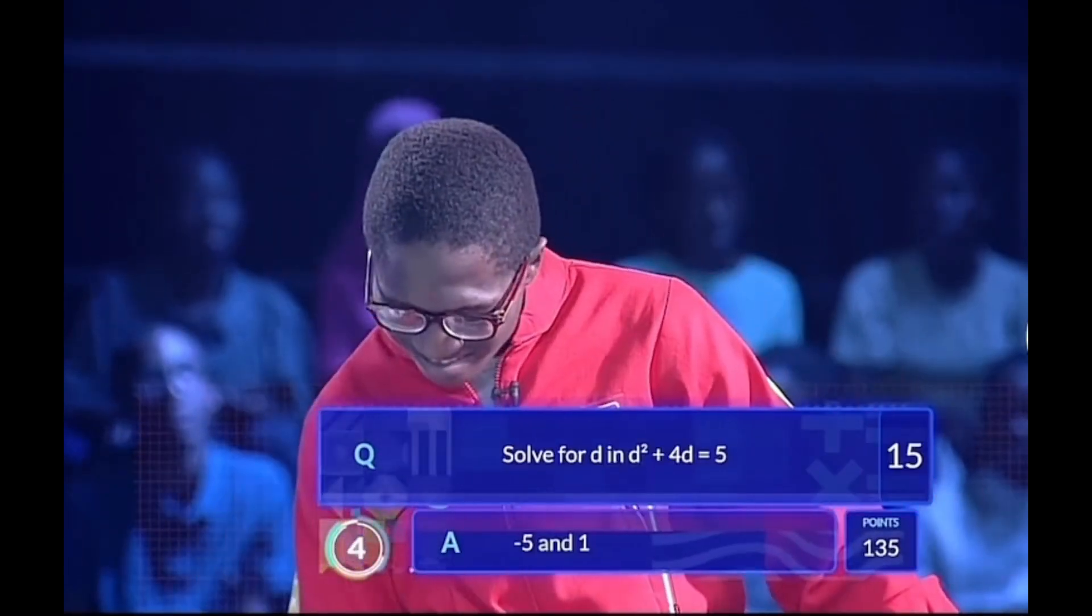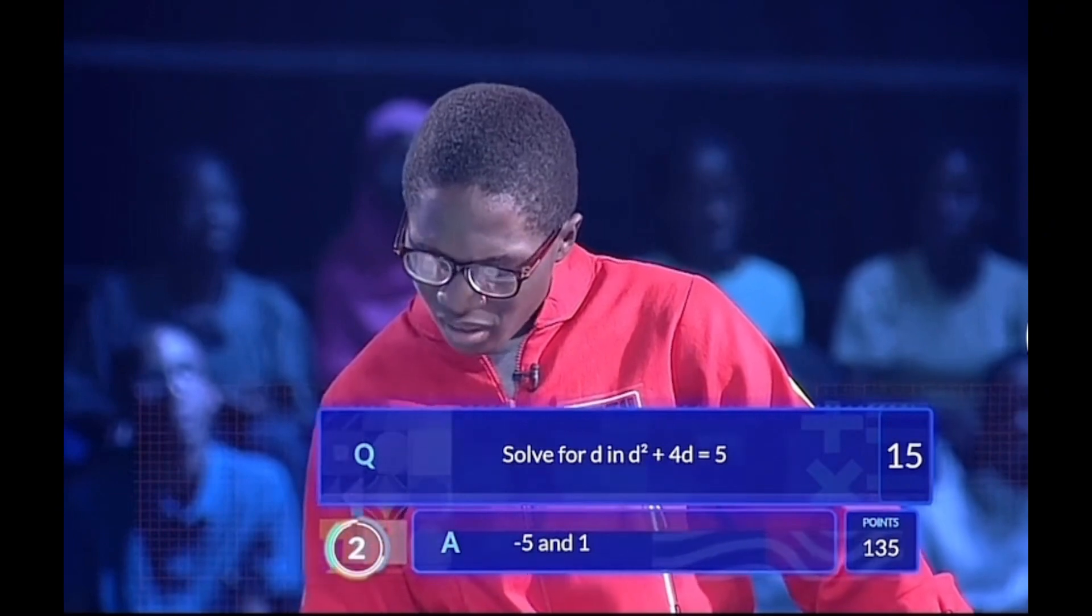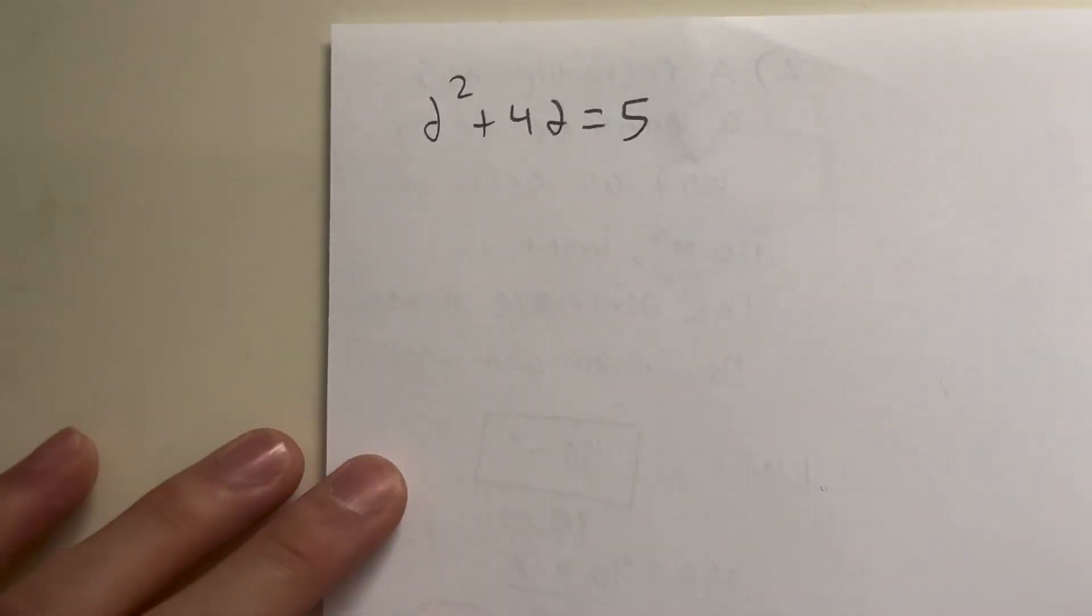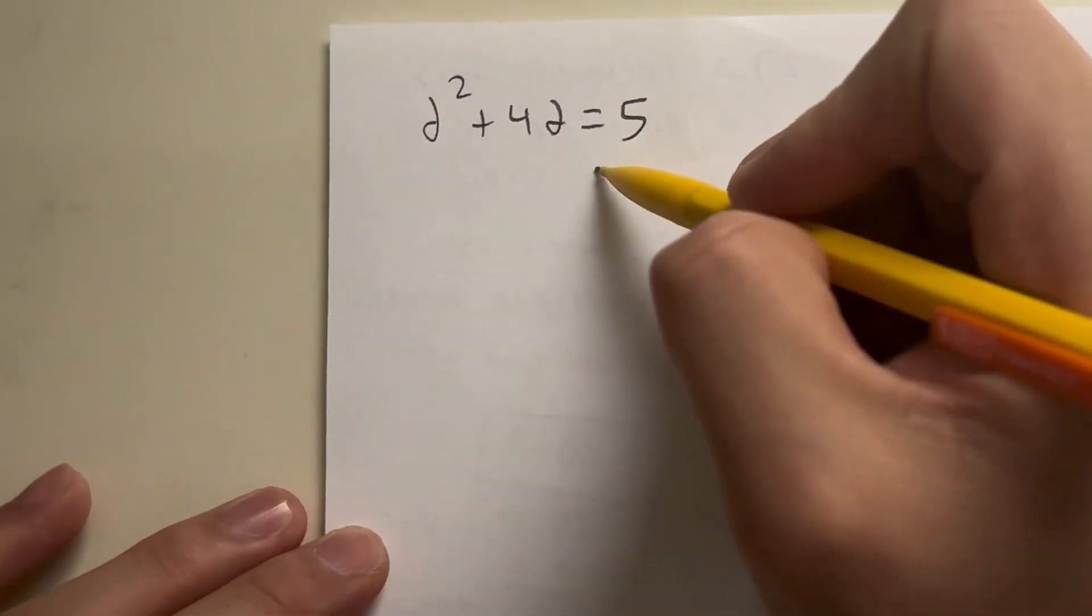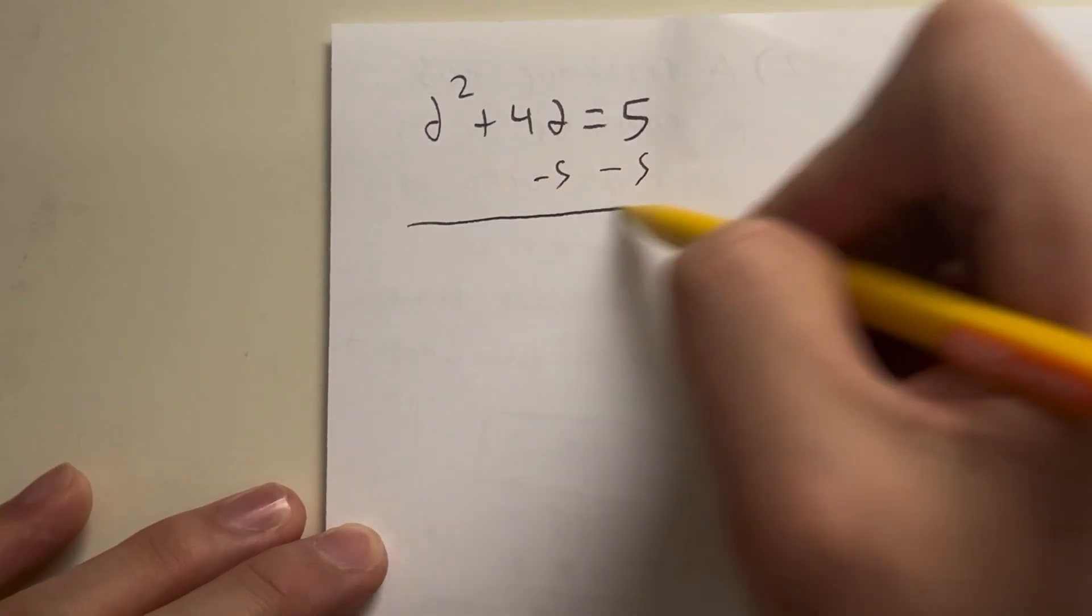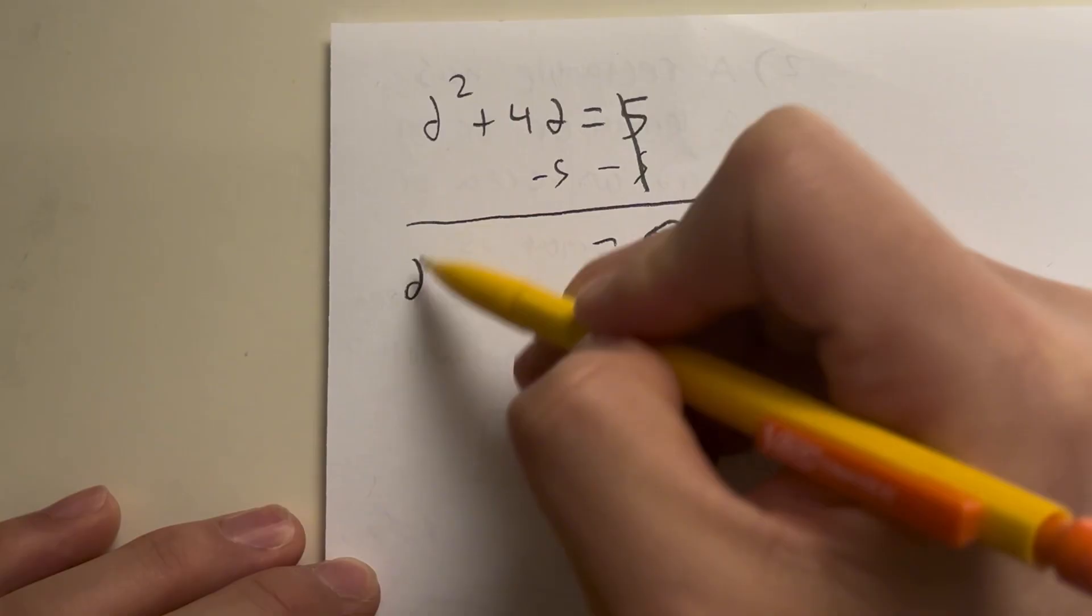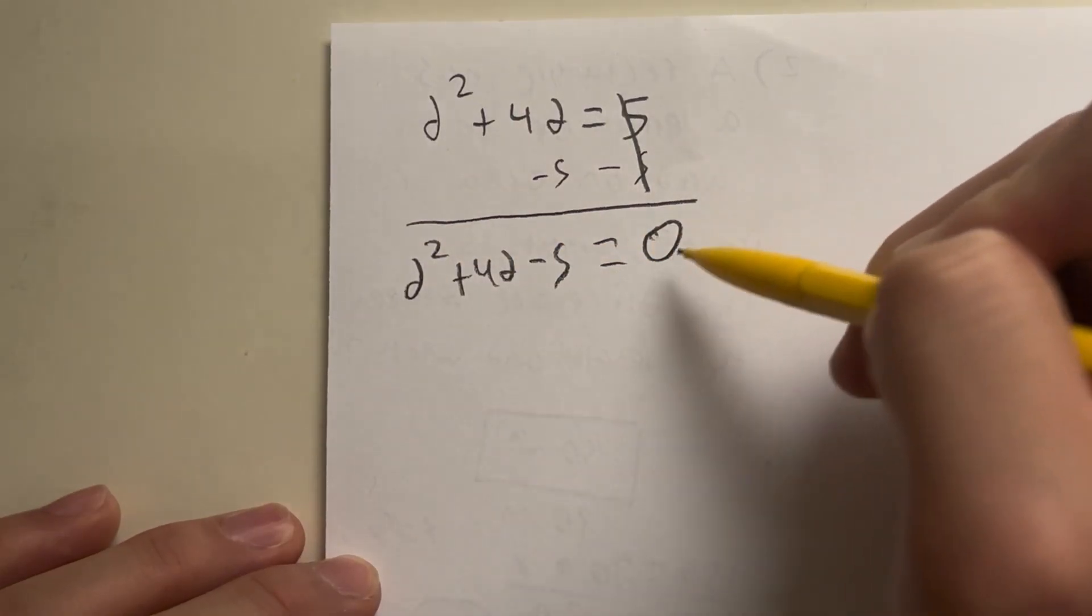d squared plus 4d equals 5. D equals minus 5 or 1. Correct. He might have gotten a little nervous, but this question is actually super easy. To do this question, first, we have to create a quadratic. And I can do this by moving 5 onto the other side. Because once I do this, I have 0 on the other side. I have d squared plus 4d minus 5 is equal to 0.